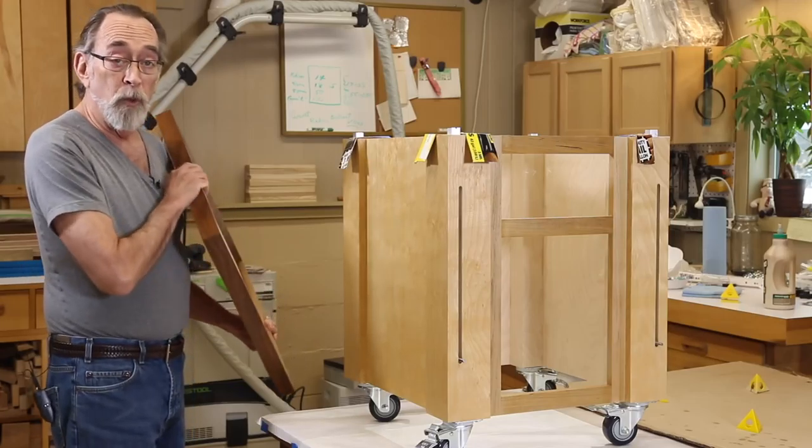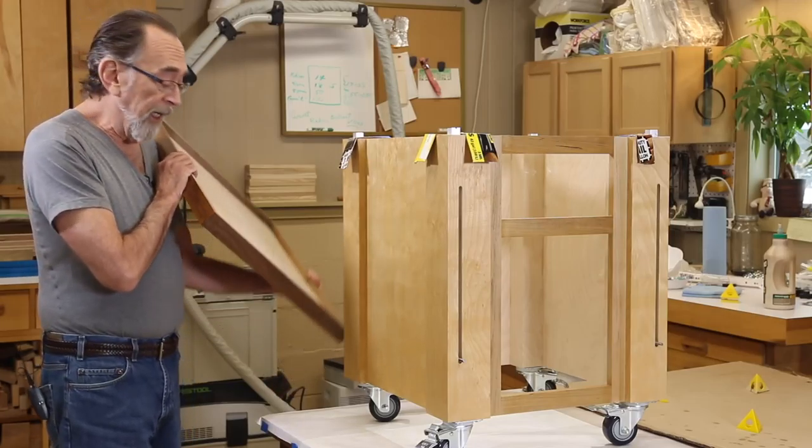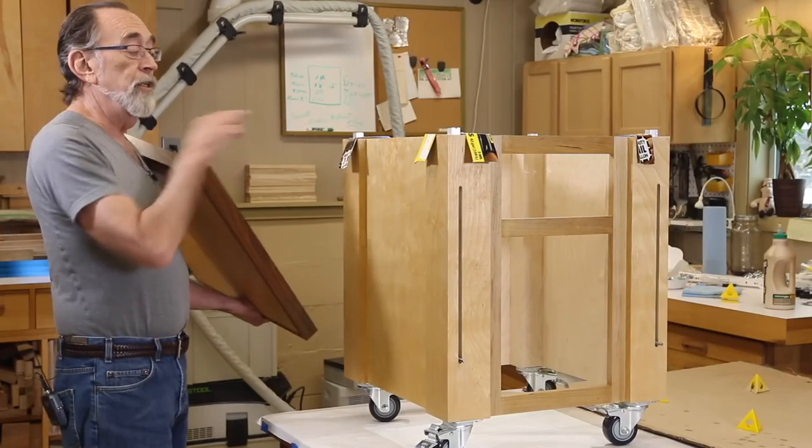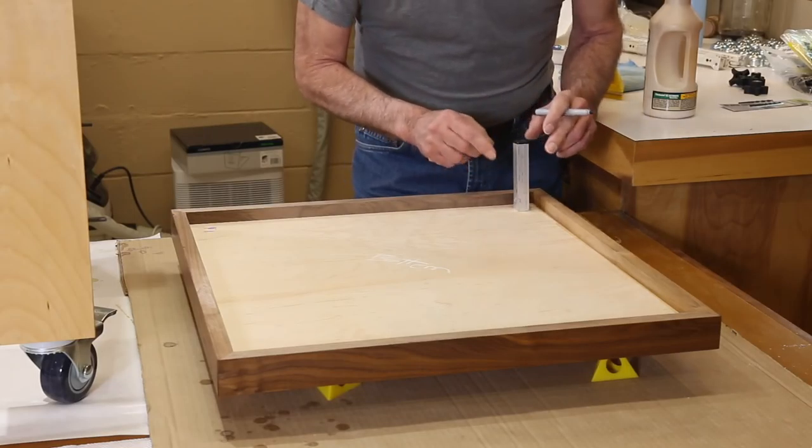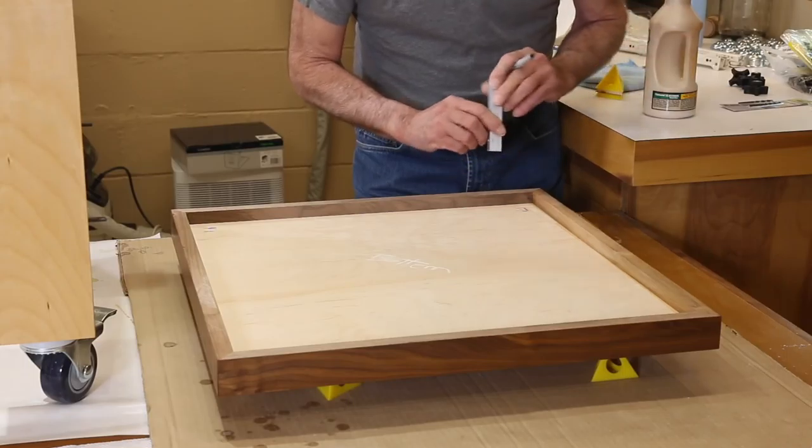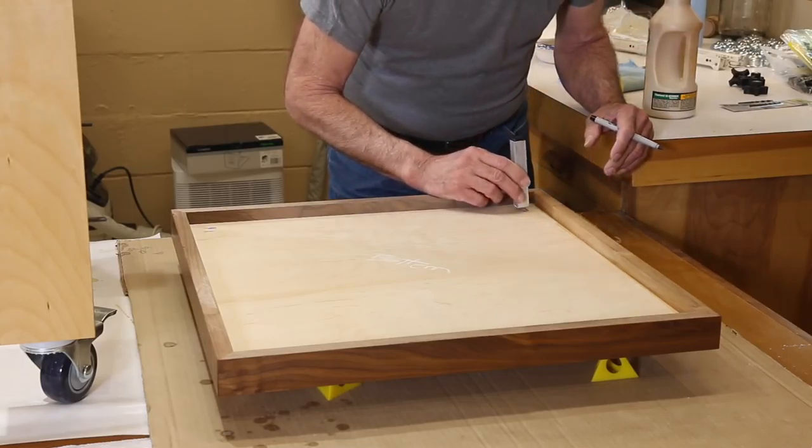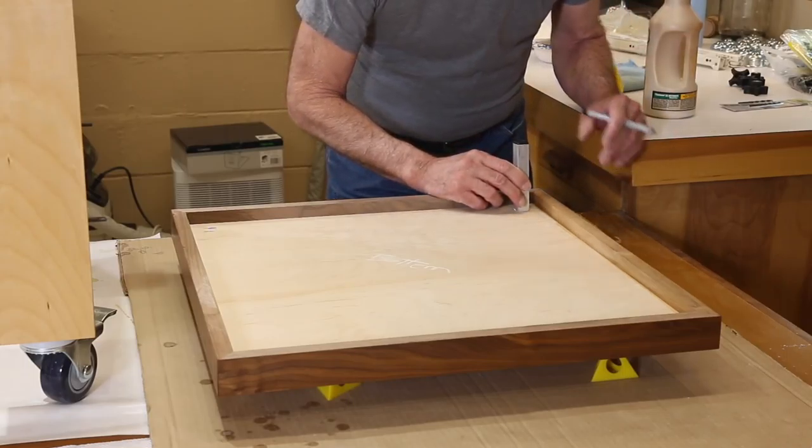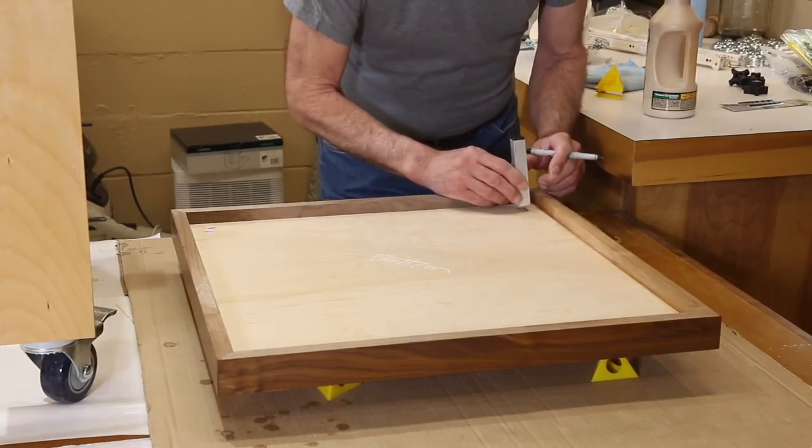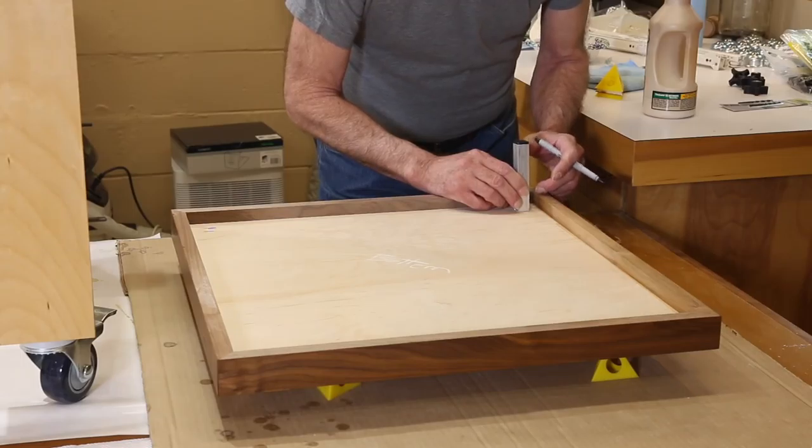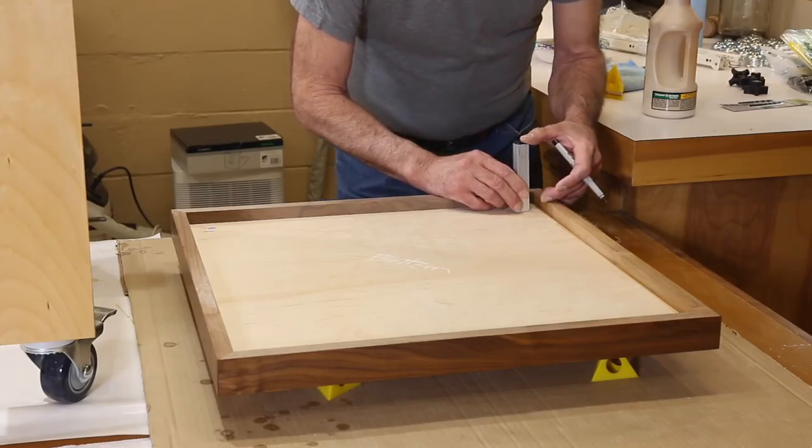I'm going to do that with the other top as well, and then we'll start cutting out those pockets for these tubes. Okay, now we've got our lipstick marks on here and I've got a scrap of our aluminum stock. I'm going to line this up.